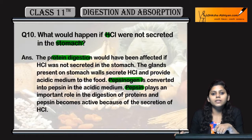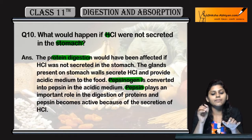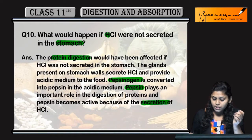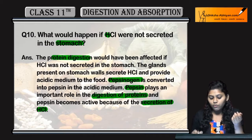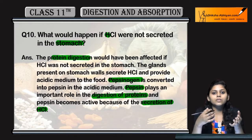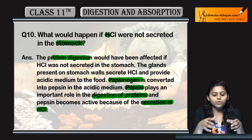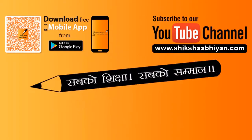Pepsinogen, the inactive form, converts to pepsin by the action of HCl. If HCl is not secreted, pepsin will not be formed, and then protein digestion will not occur. So secretion of HCl is necessary and important for the digestion of protein, so that pepsin is formed and digestion of protein can happen easily.